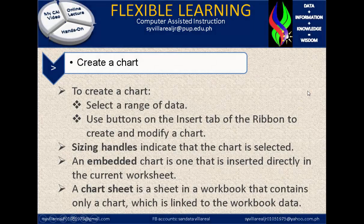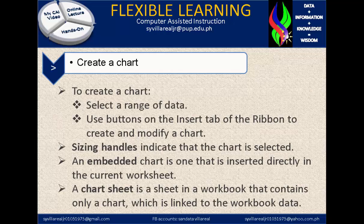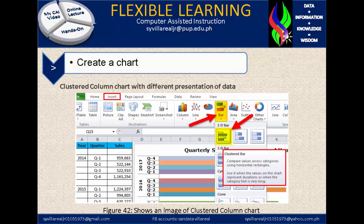To create a chart, you need to select a range of data. Use buttons on the Insert tab of the ribbon to create and modify a chart. Sizing handles indicate that the chart is selected. An embedded chart is one that is inserted directly in the current worksheet. A chart sheet is a sheet in a workbook that contains only a chart, which is linked to the workbook data. Figure 41 shows an image of a clustered column chart — this is what you call a clustered bar, and it can be in 2D or 3D. You will notice the data and the interpretation of the data, which is the chart.